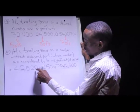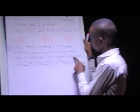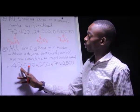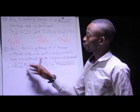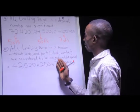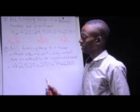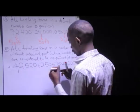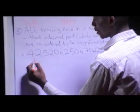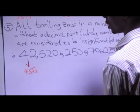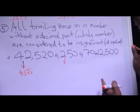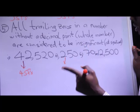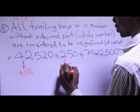For 42520, the zero is not significant, so counting: 1, 2, 3, and 4 — there are 4 significant figures. For 250, the trailing zero is not significant, so only 2 and 5 are the significant figures, giving 2 significant figures.